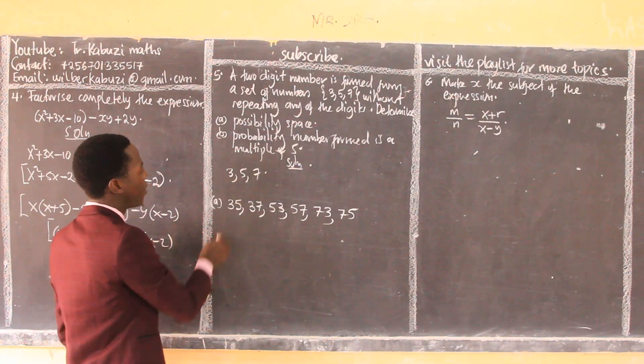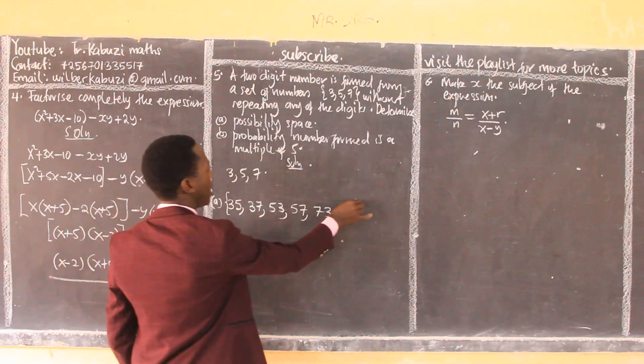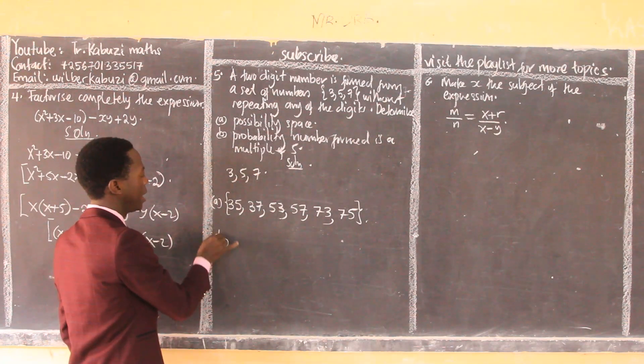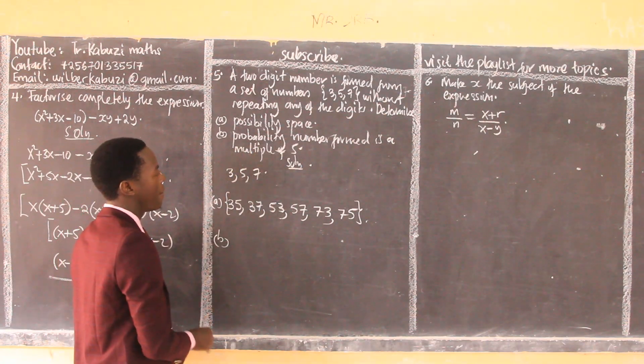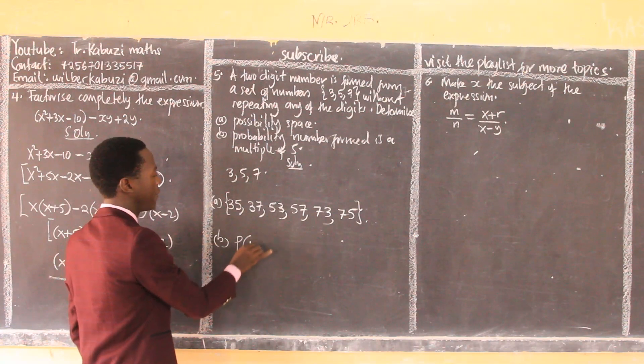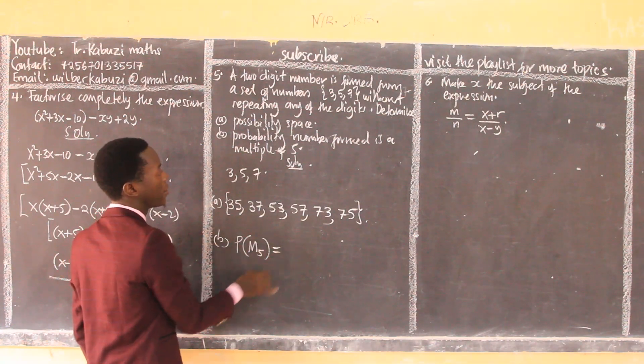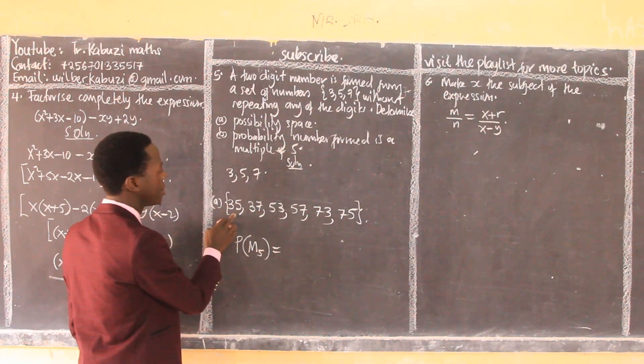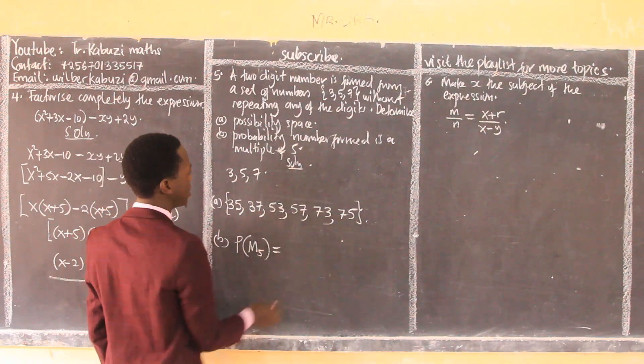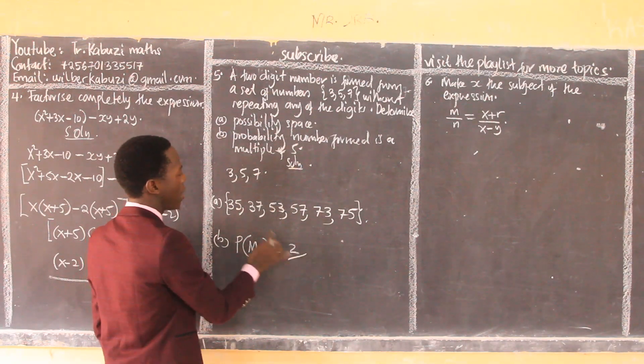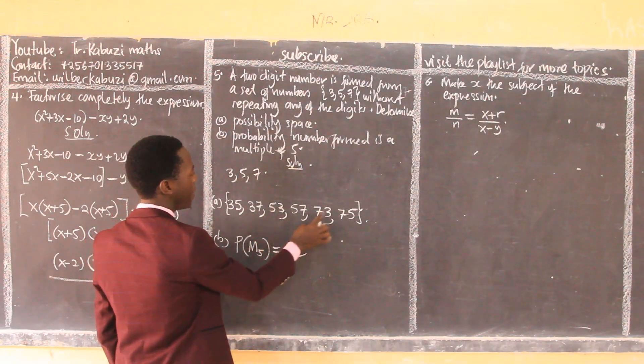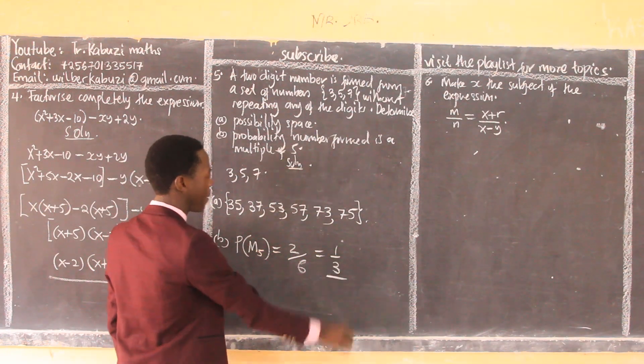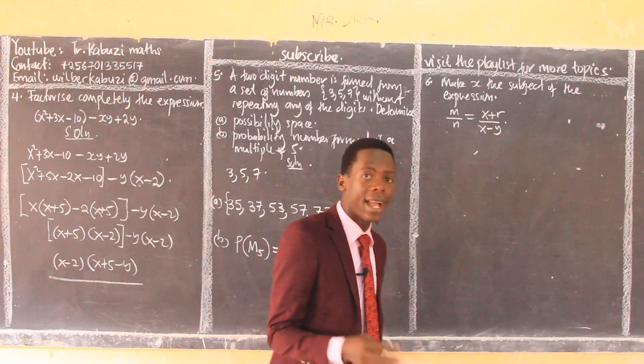So now the possible sample space - we put them in brackets like that. That's our possible sample space. Now part B is saying: find the probability a number formed is a multiple of 5. Multiples of 5 are numbers that 5 can divide. We have 35 and 75, so there are two out of six, which we can reduce to one-third. That's how easy that was.